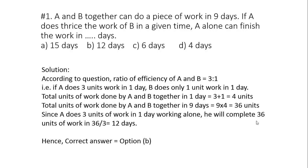Question 1: A and B together can do a piece of work in 9 days. If A does thrice the work of B in a given time, A alone can finish the work in how many days? The options are 15 days, 12 days, 6 days, and 4 days.